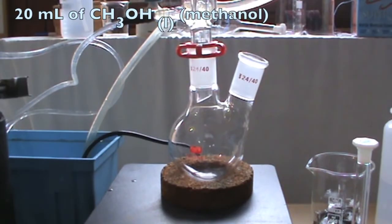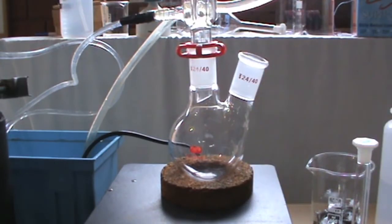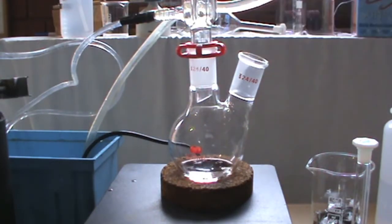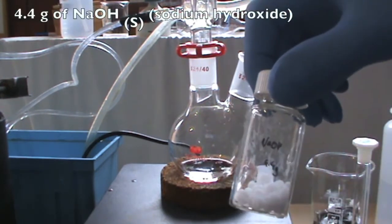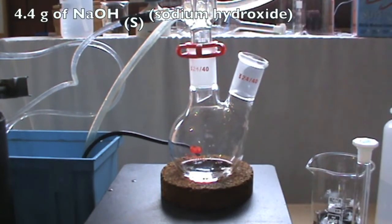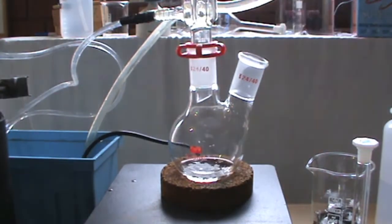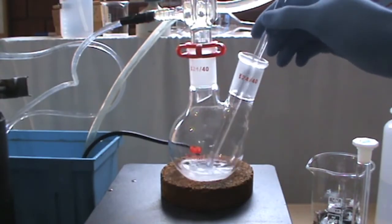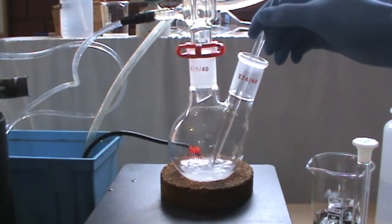Get the 20 ml of methanol and pour it into the round bottom flask. After that, get the 4.4 grams of sodium hydroxide and add it into the flask containing the methanol. Once the chemicals are all added, stir it very thoroughly. Note, dissolving the sodium hydroxide in methanol will take some time, so be patient and keep stirring.